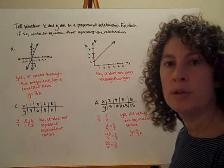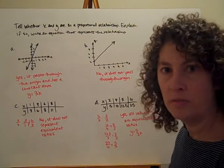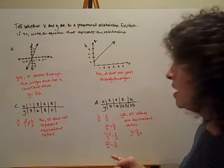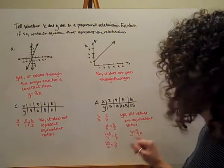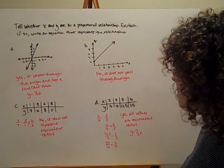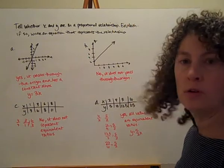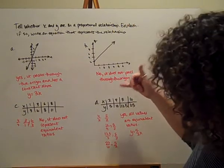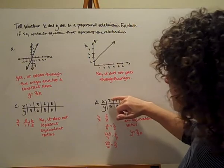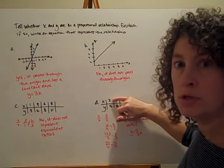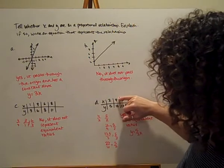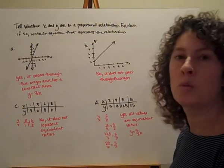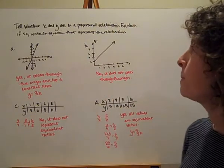So that's my slope — that's my constant of proportionality from our direct variation equations. Yes, all the values are equivalent ratios. So I can write my equation as y equals 5/2 times x. And if I plug that in, 5/2 times 2 would give me 5, and 5/2 times 4 would give me 10. So this equation works with the values in my table.